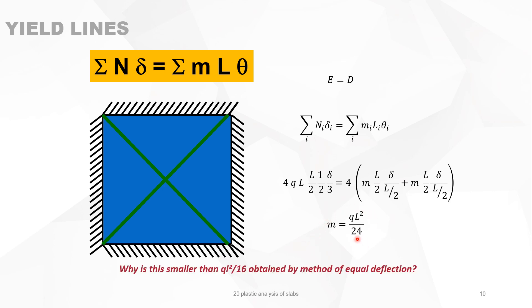In previous lessons using the method of equal deflection, we obtained qL squared over 16. So how can both apply to the same slab? This is a nice illustration of upper and lower bound methods. The method of equal deflection is a lower bound method — it gives qL squared over 16, the lowest bearing capacity. The method of yield lines is an upper bound method — qL squared over 24 gives the maximum load the slab can carry.